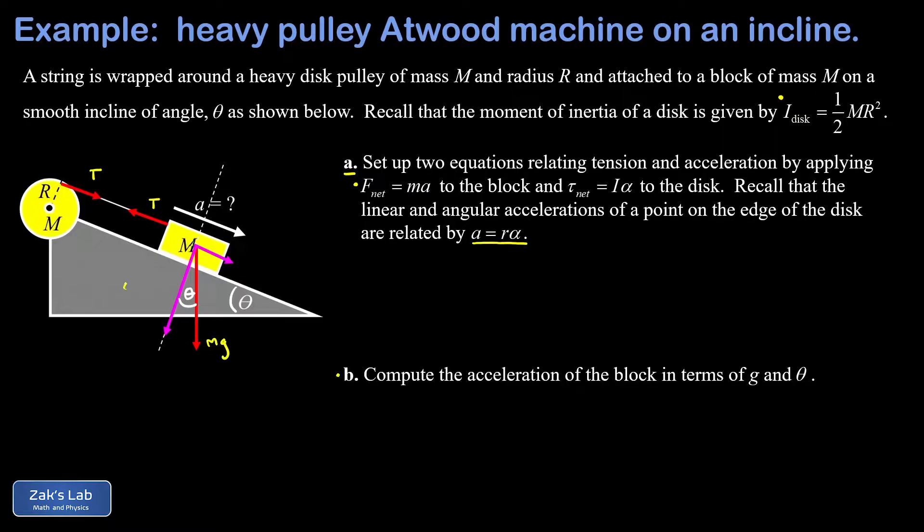this perpendicular piece is mg cosine theta and the parallel piece, which is the one we're concerned with, is mg sine theta. That perpendicular piece determines the normal force, but that would only matter if we had friction in this problem. Our disc is accelerating in the angular sense with an acceleration of alpha, and the linear acceleration on the edge of the disc, which is the same as the acceleration of the string, is given by this relationship a equals r alpha.